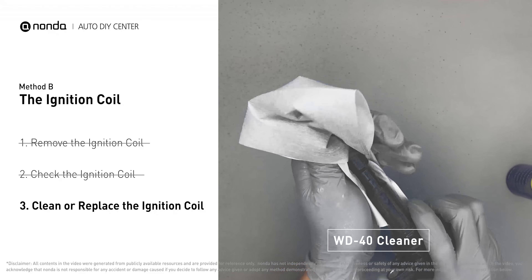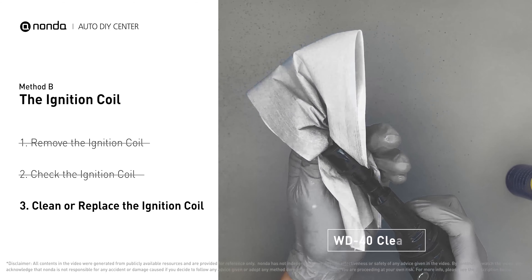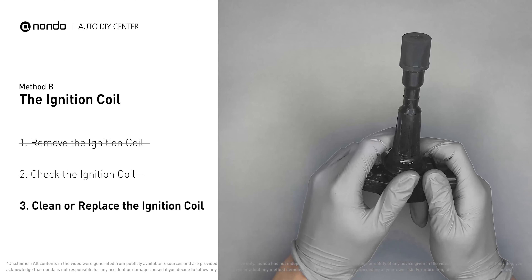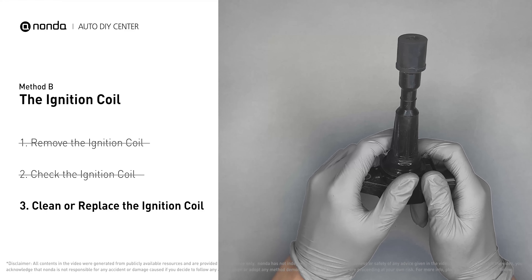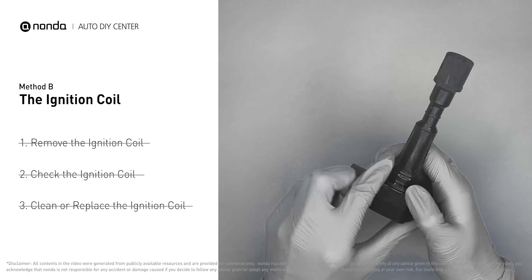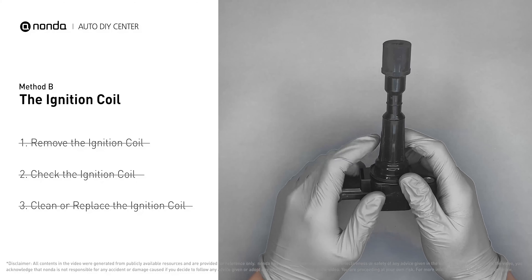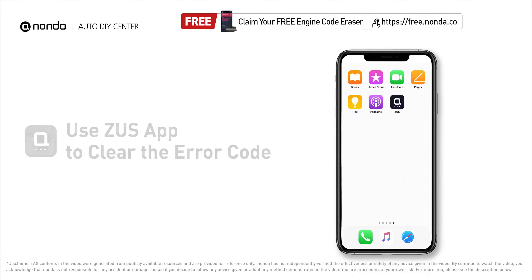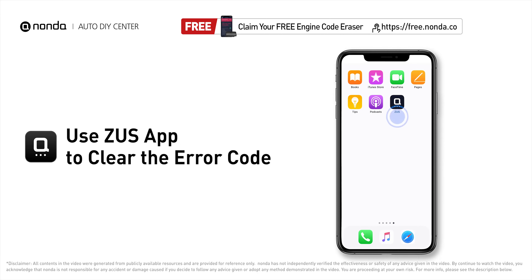If the ignition coil is covered with engine oil or stains, simply clean it with a WD-40 cleaner. Otherwise, replace the damaged ignition coil with a new one. So here are two of the most practical solutions to fix Jeep's P0310 error code.